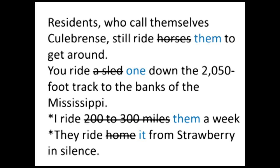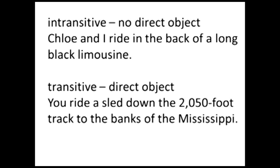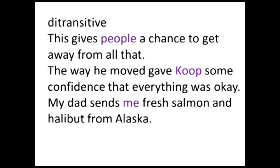To recap the two structures so far: an intransitive clause has no direct object — 'Chloe and I ride in the back of a long black limousine'; it doesn't matter how much comes after the verb, it's not an object. Monotransitive clauses do have a direct object — 'you ride a sled' — and then there can be other complements or adjuncts after that. The third possibility for transitivity is two objects; we call these clauses ditransitive.